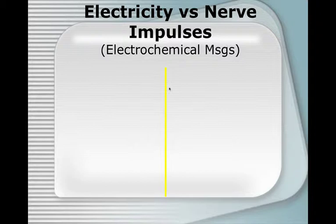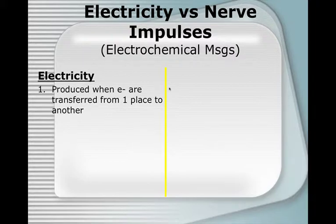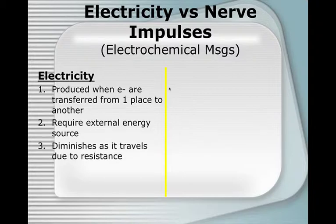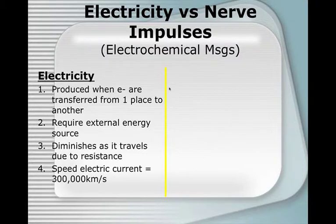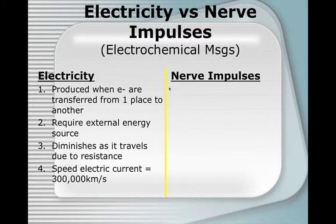We want to compare and contrast electricity versus nerve impulses because they are not the same thing. They have some similarities and some differences. Electricity is produced when electrons are transferred from one place to another. They require an external energy source and electricity diminishes as it travels due to resistance. The speed of electric current is very fast — around 300,000 kilometers per second, almost like the speed of light.